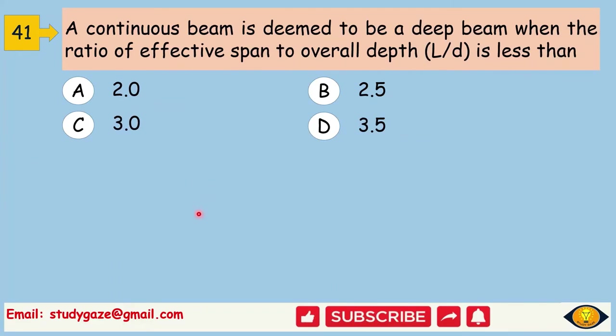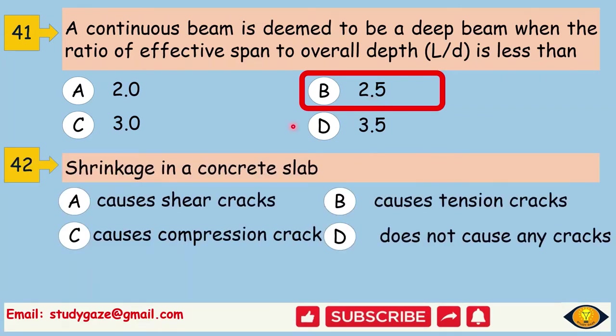A continuous beam is deemed to be a deep beam when the ratio of effective span to overall depth L by D is less than. Answer is 2.5. Shrinkage of a concrete slab. The answer is causes tension cracks.